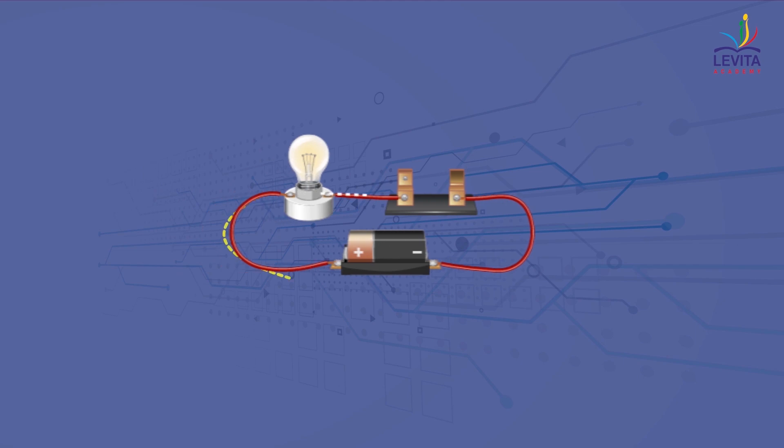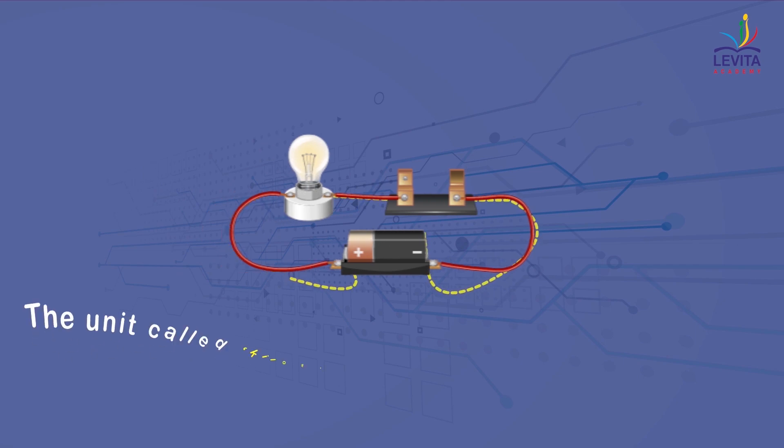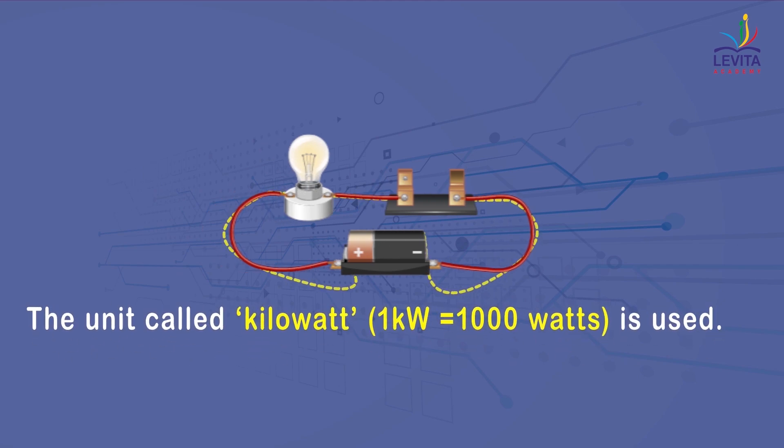The unit watt is very small. So, in practical usage, the unit called kilowatt is used. Since electrical energy is the product of power and time, the unit of electric energy is therefore watt hour.